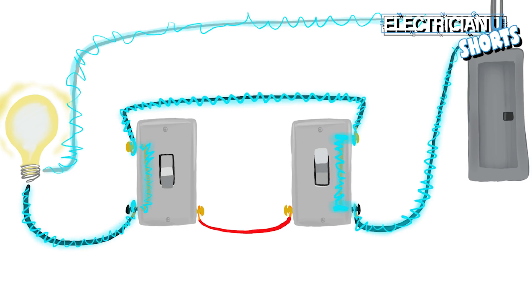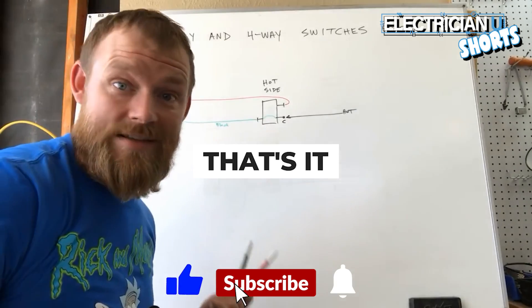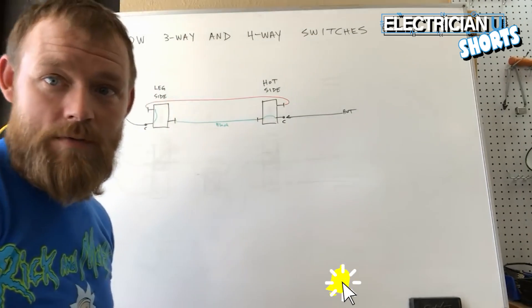And if you're back on this side and you wanted to change the switch so that the light goes off you just change this one and it connects the common to this traveler. So you have power that goes through and stops. It has no way of getting over to the light. That's pretty much it. That's the simplest explanation I have for how a three-way switch works.